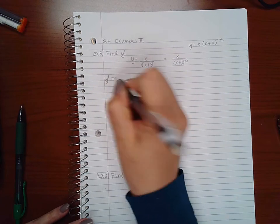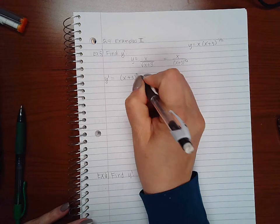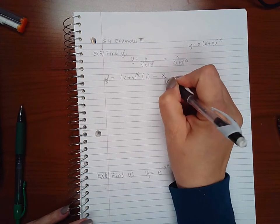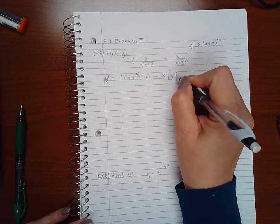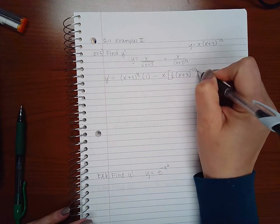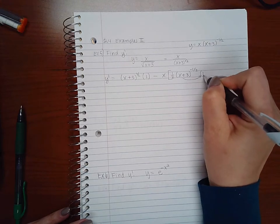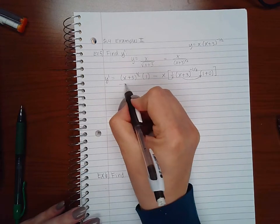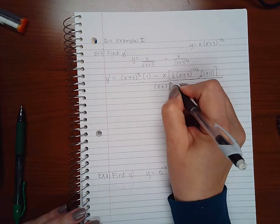So when I take the derivative of this function, it's going to be low d high, derivative of x is 1, minus high d low. So bring down my one half, keep my base the same, decrease my power by 1, and because the base is not just an x I have to multiply by the derivative of that base. And this will all be over low squared.